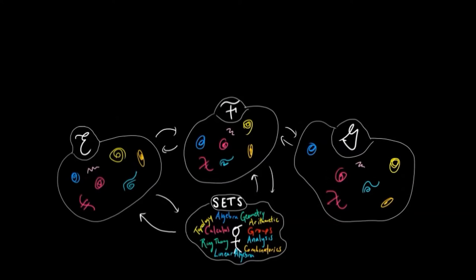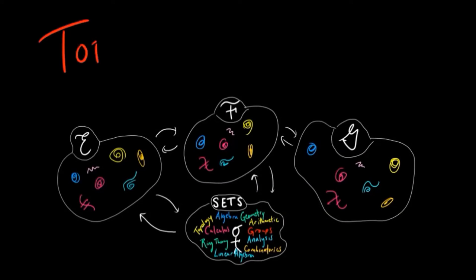A mathematical universe is called a topos, with its plural being toposes, or sometimes topoi. But you can think of them as nice places to do math.